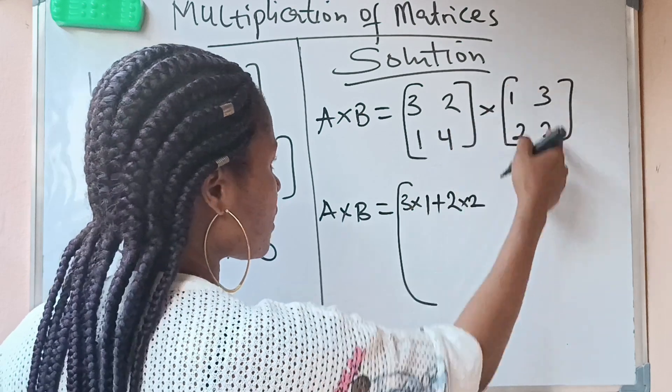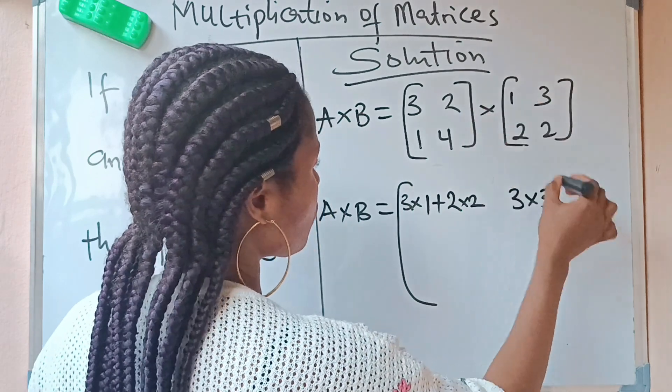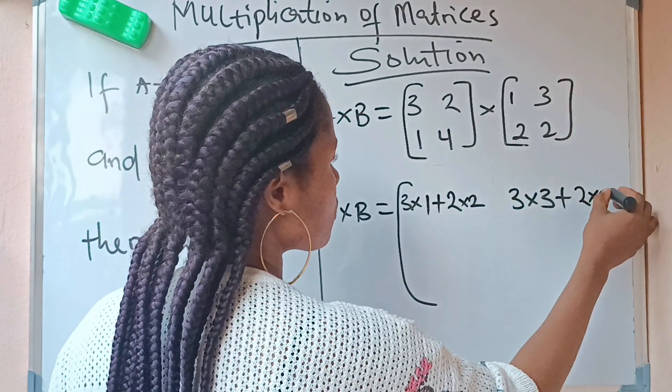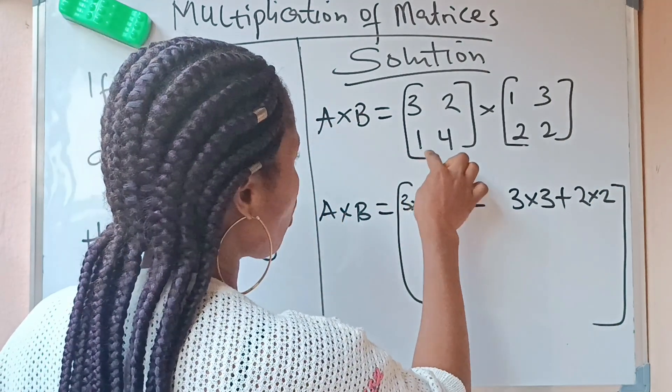I'll now go with this and this. So 3×3, you have 3×3 + 2×2. We are through with that side. Now we are going in with the second row against the columns.